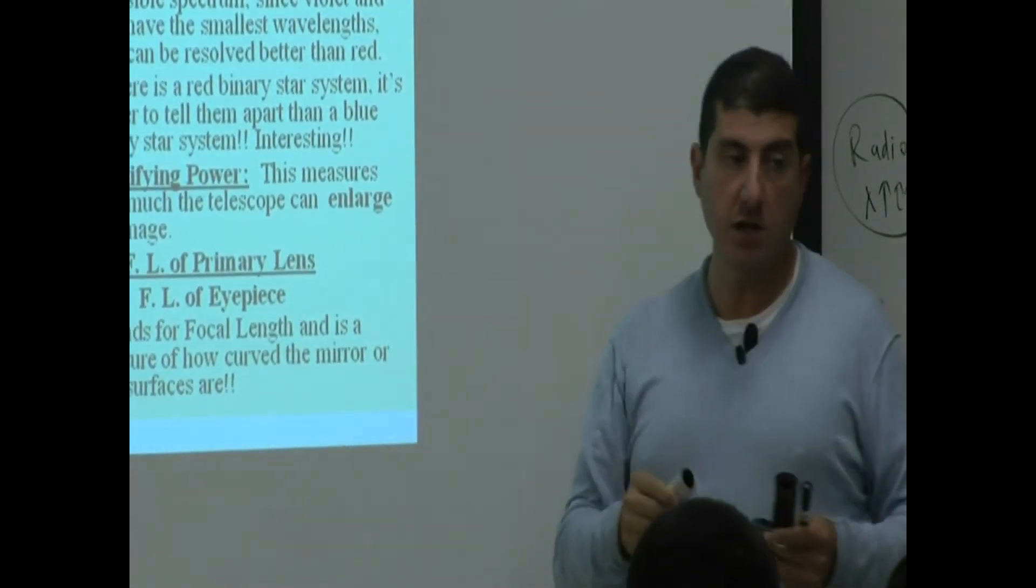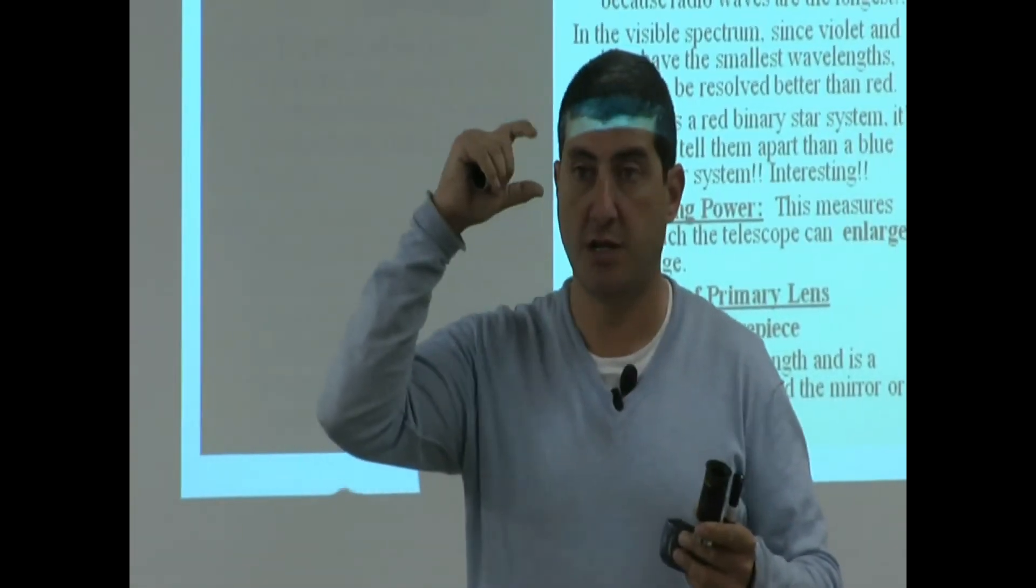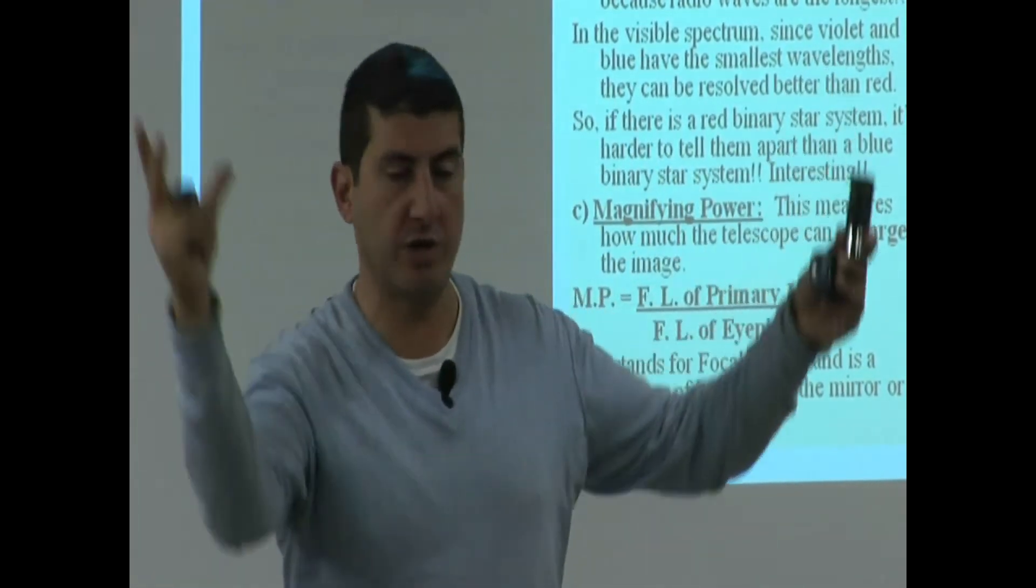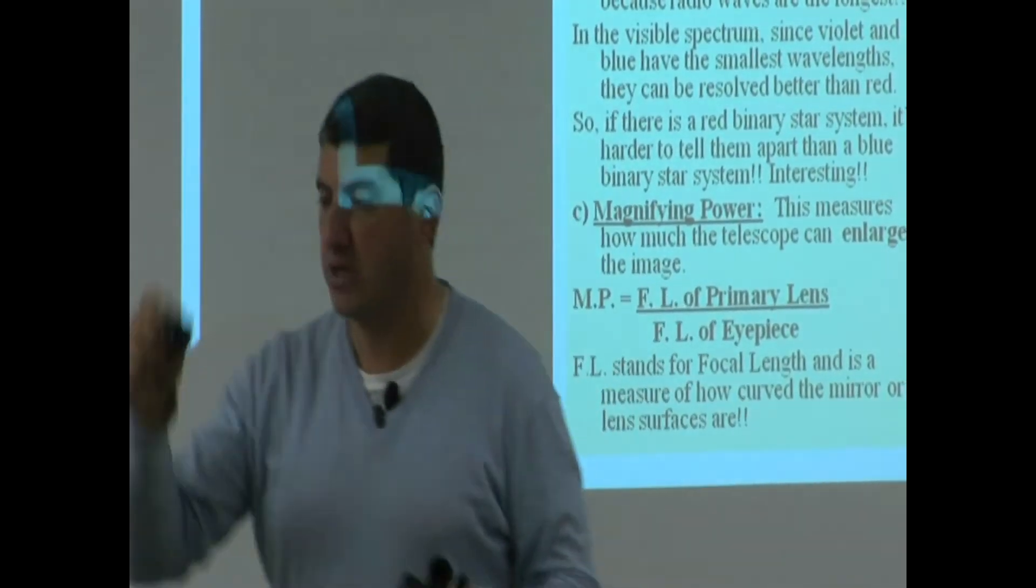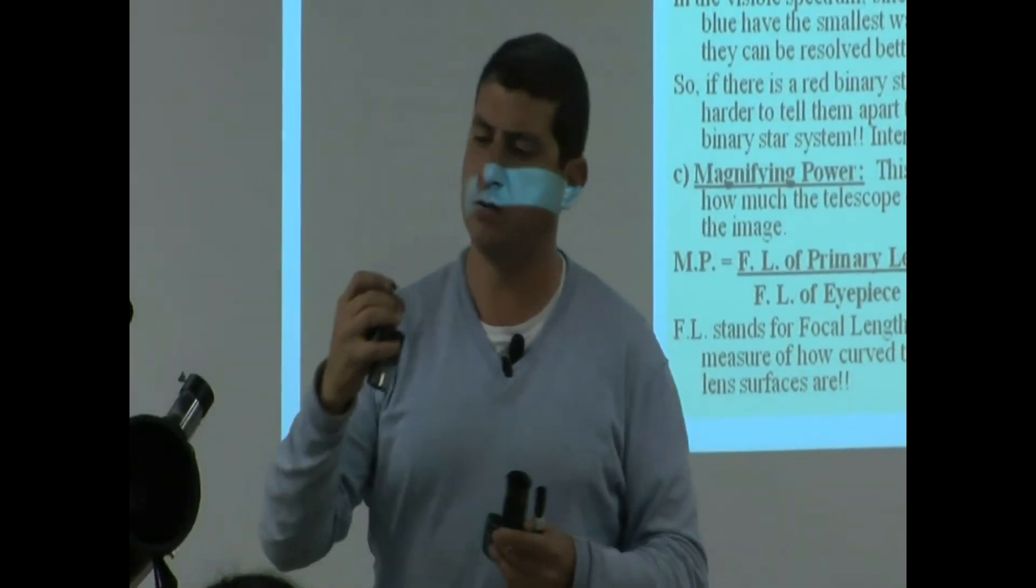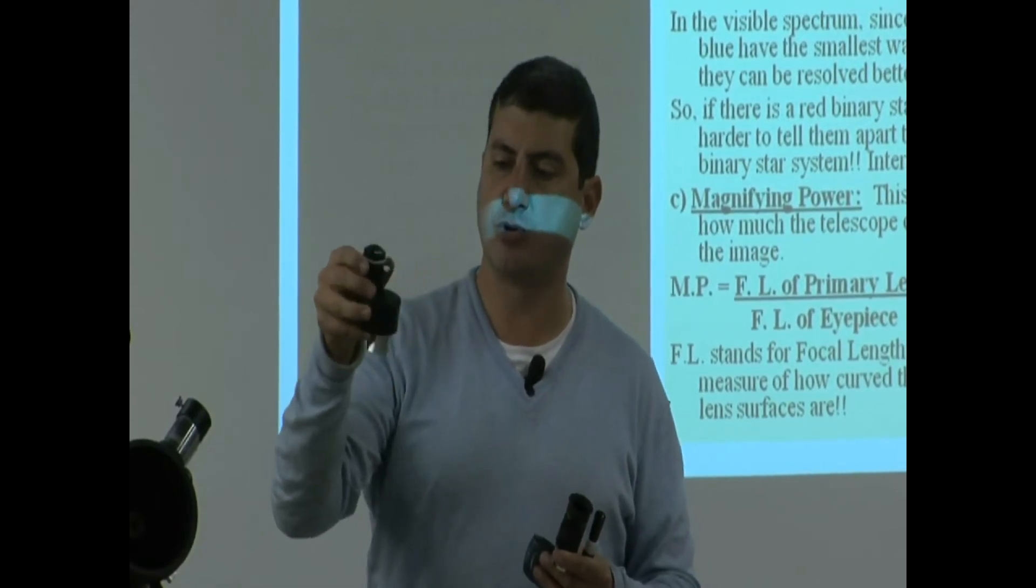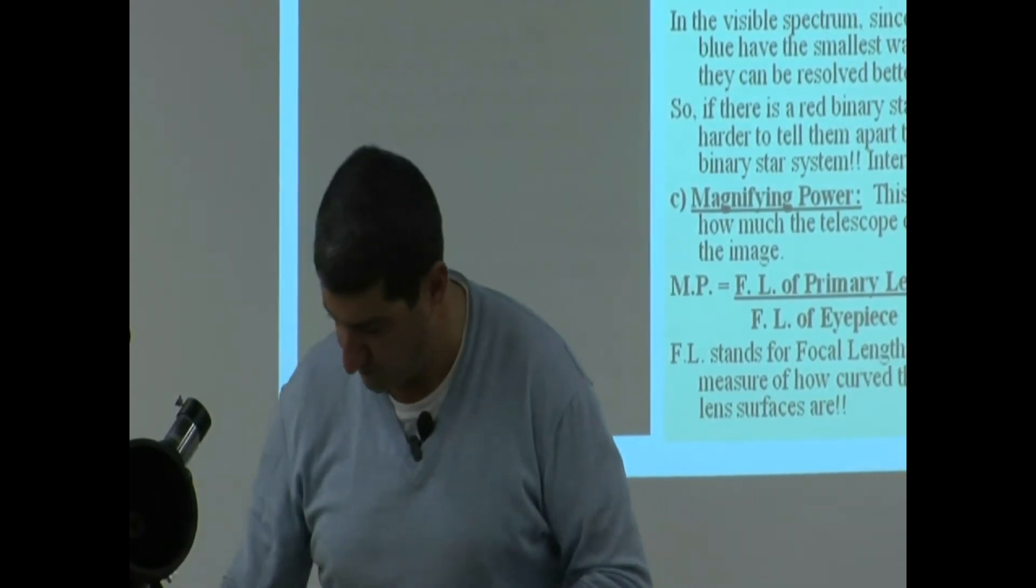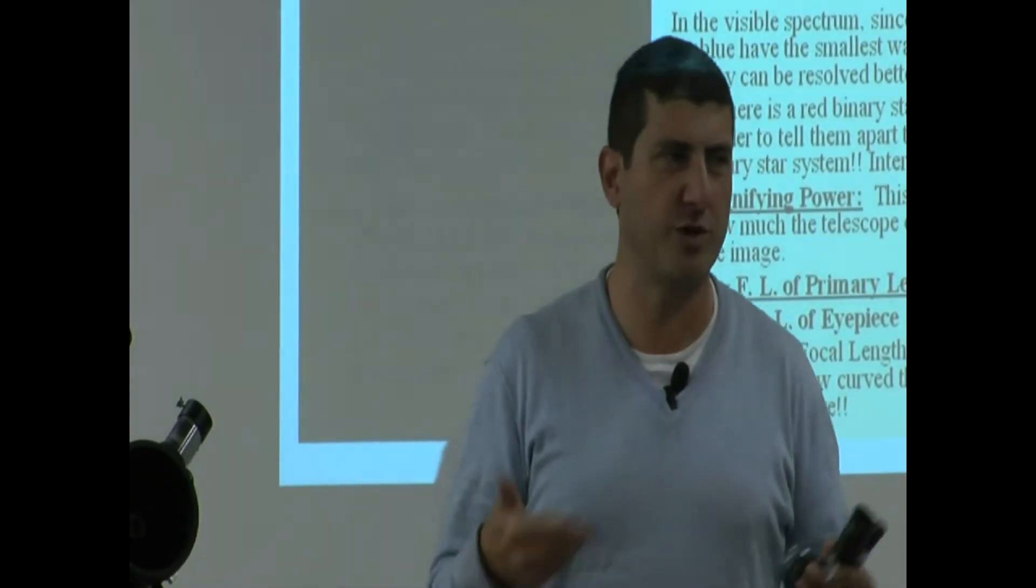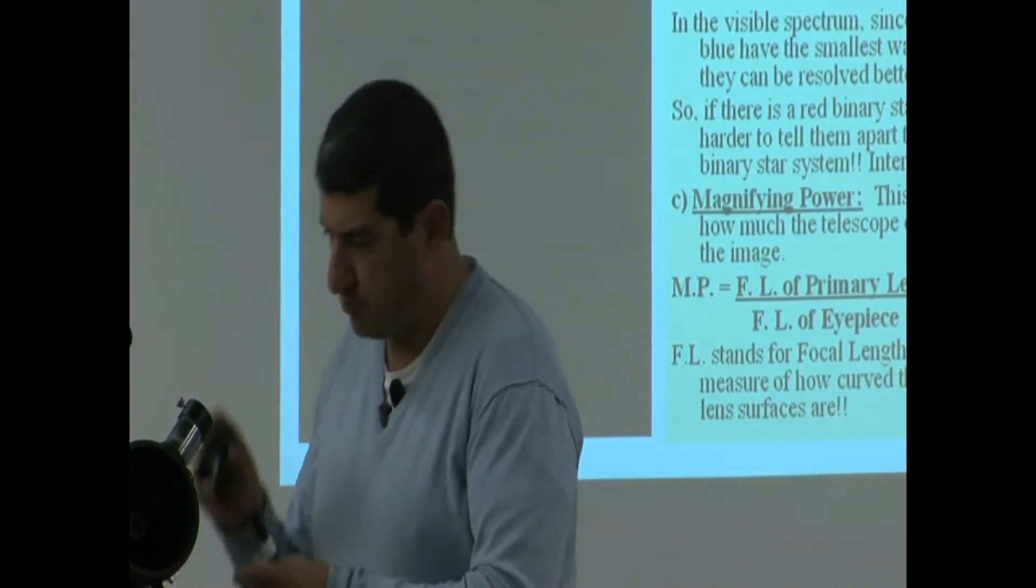The same thing happens when you buy the regular cameras. You buy different pieces to it, depending on how much you want to magnify. And they come with different eyepieces. This one is another one. This one is 7 millimeters focal length. So those are all the accessories that you buy when you buy a telescope or when you buy a camera, you can buy all those accessories.